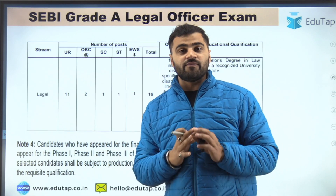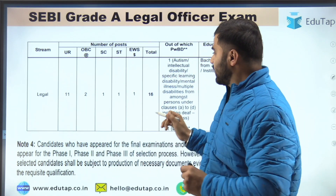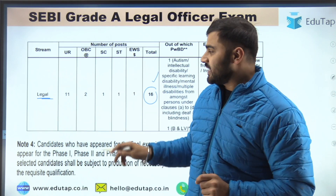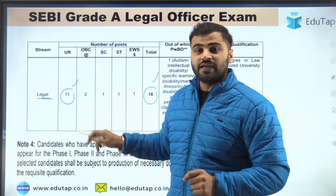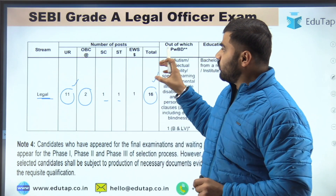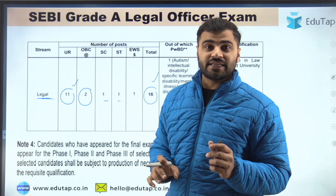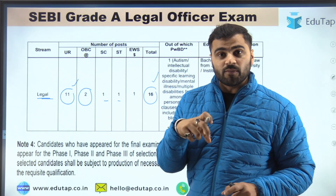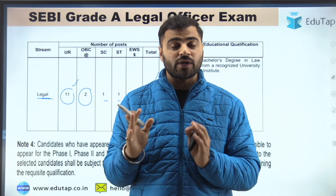Next, let's talk about vacancies. The vacancies are very good. There are 16 vacancies for the legal stream. Breaking them down by category: 11 vacancies are for general candidates, 2 for OBC candidates, and 1 each for SC, ST, and EWS candidates. So total there are 16 vacancies — start the preparation from today onwards.